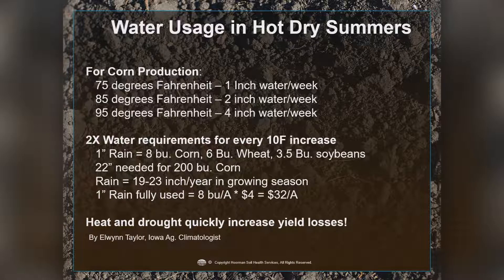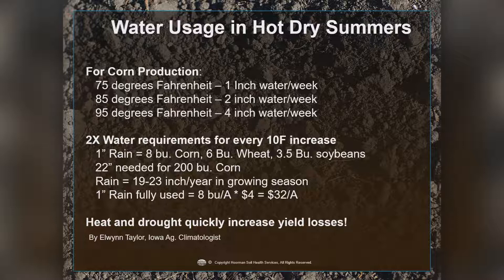Information from Elwin Taylor shows that for corn production, we need about one acre-inch of water every week when soil temperature is 75°F. When we increase that soil temperature by 10 degrees to 85°F, we double our water requirement to two acre-inches per week. Adding another 10 degrees to 95°F doubles it again to four acre-inches per week. So two times the water requirement occurs for every 10-degree increase in soil temperature.